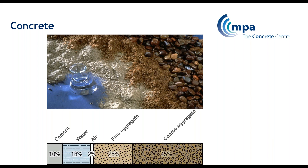So concrete is made up of cementitious material, water, a little bit of air — you don't get embodied carbon for air — fine aggregate and coarse aggregate, so the fine aggregate is the sand. You can see that a lot of the concrete is made up of aggregate, so it's mostly aggregate with a little bit of cement and some water. And when you're looking at the embodied carbon of concrete, you need to think about what that mix is.